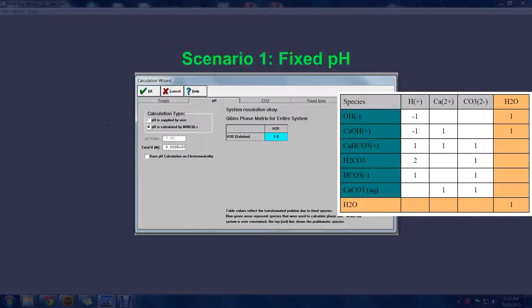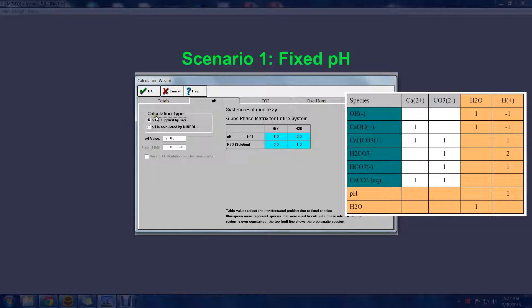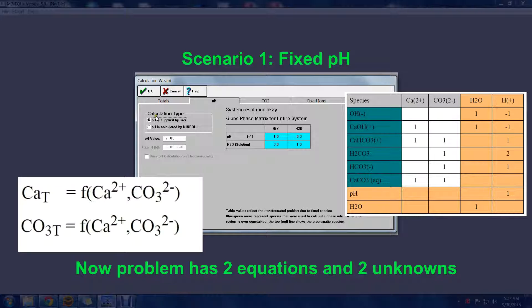Now, what will happen if we want to fix the pH to a known value? Since the pH is a set value, the free proton concentration is no longer an unknown. The tableau reduces in scope, and our problem reduces down to two equations and two unknowns.